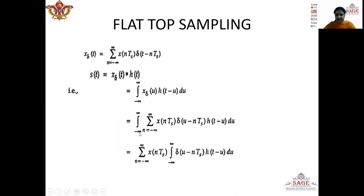So here we will take the integration from minus infinity to infinity. Instead of x_delta(u), I will write the equation by replacing small t with small u. So I will get: summation of x(nTs) delta(u minus nTs) h(t minus u) du. Now, since x(nTs) has a constant value because it is defined at integral multiples of Ts, we can take it out of the integral sign. So the summation x(nTs) is taken outside the integral sign, and inside the integration we will get: integral of delta(u minus nTs) h(t minus u) du.